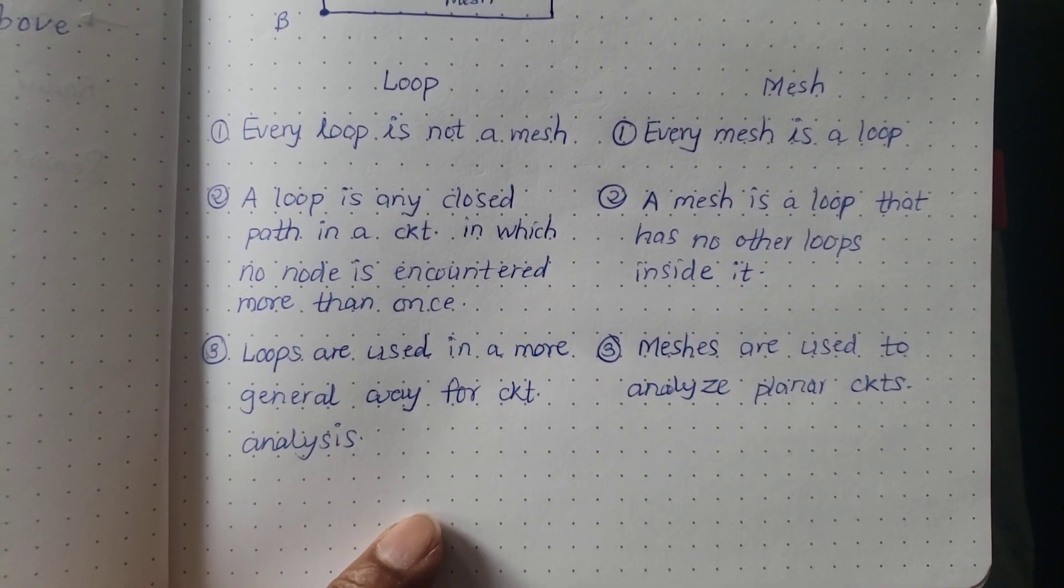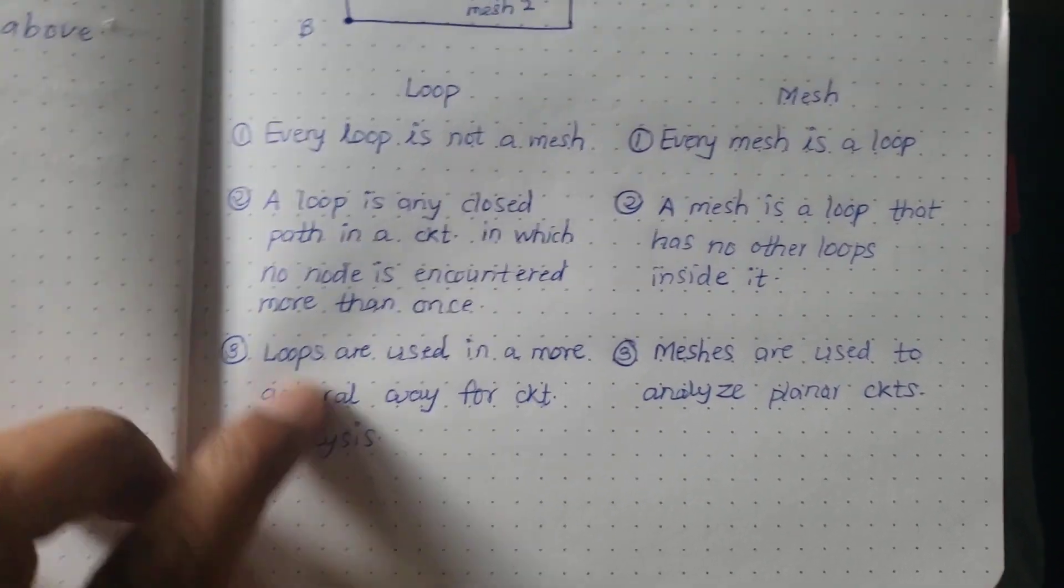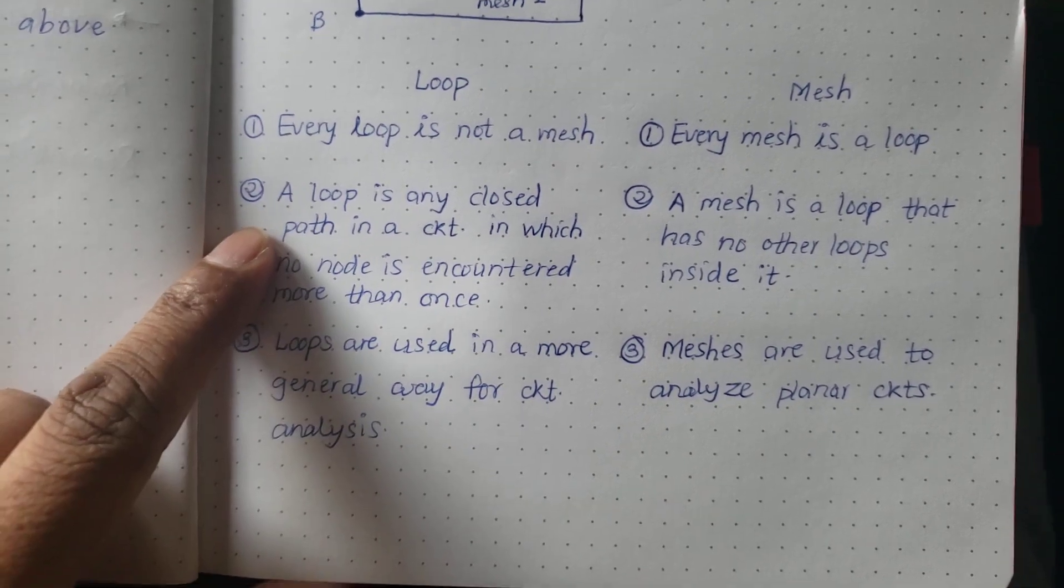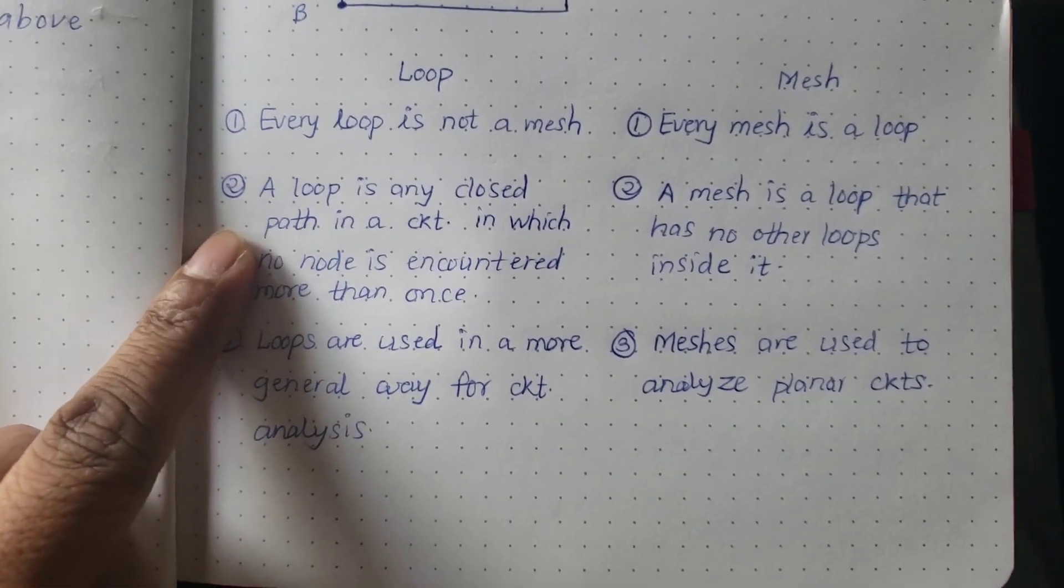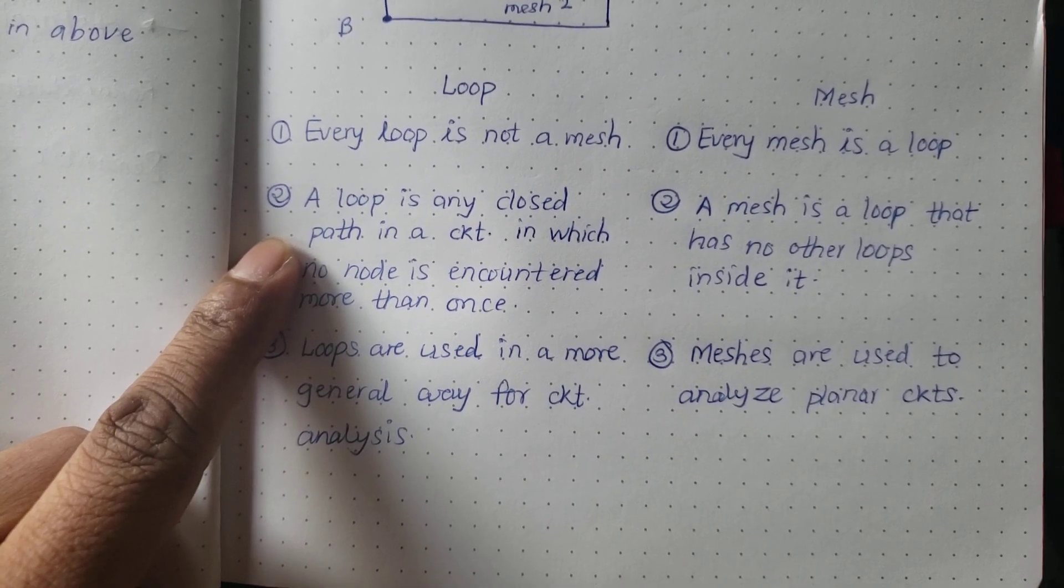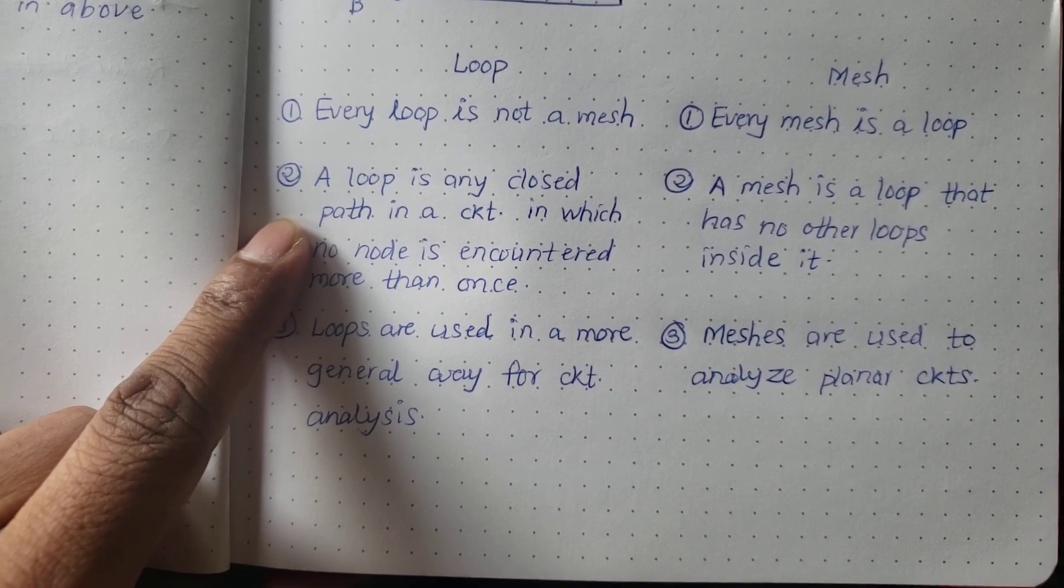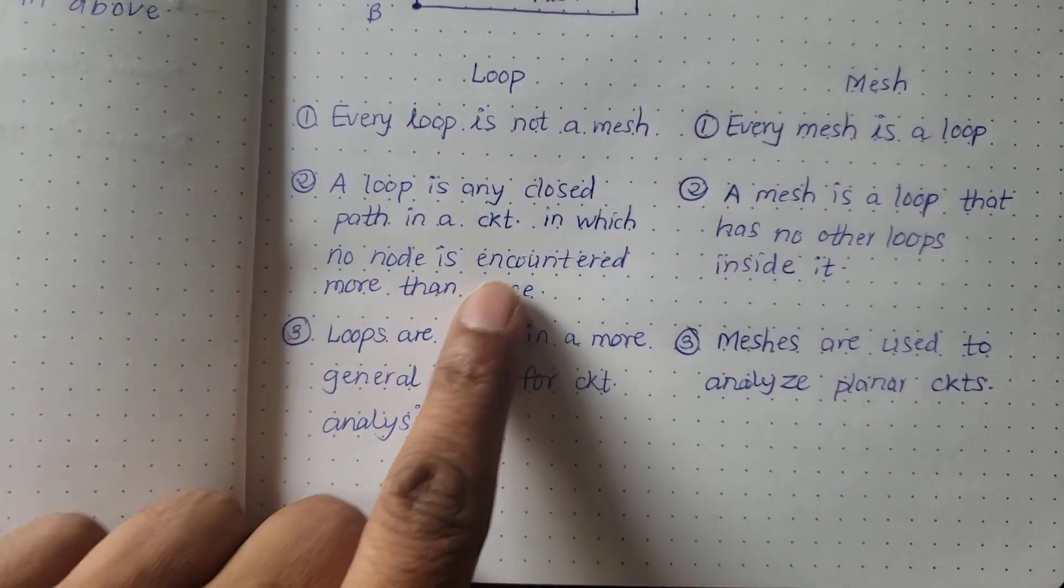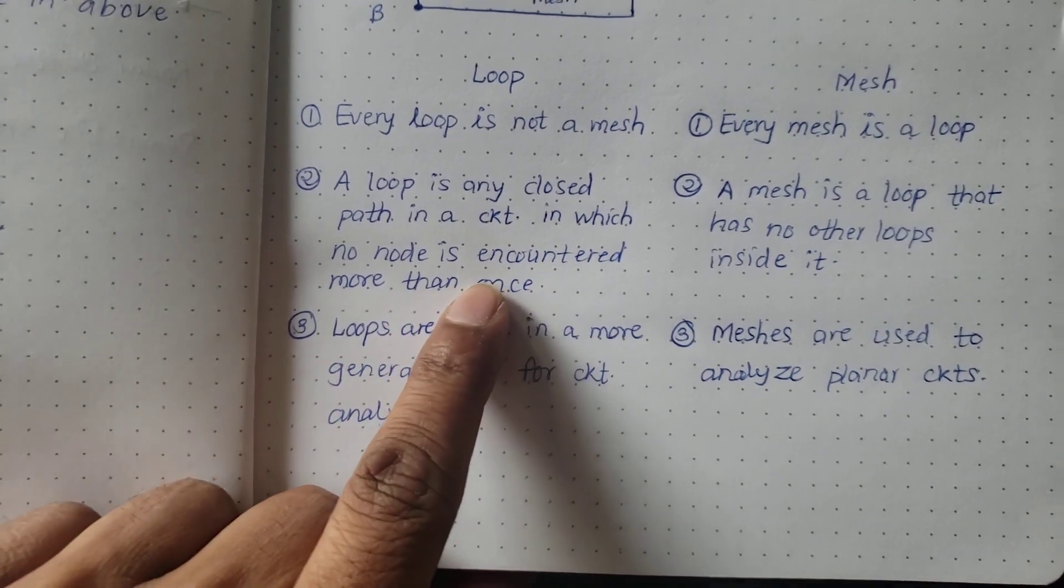As you see here I have written down the differences, so let's start with point number two instead of point one because it is a definition of loop and mesh. What is loop? A loop is any closed path in a circuit in which no node is encountered more than once.